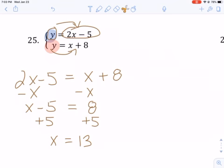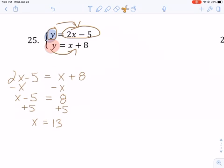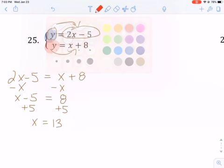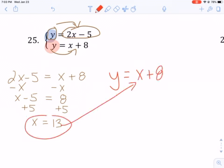And now that I have a value for x, I can substitute x into either of these equations. The one I'm going to go with is y equals x plus 8. Why? Because it's an easy one. So now that I have a value for x, I'm going to substitute it. So I'm going to get y equals 13 plus 8. 13 plus 8 gives me 21.